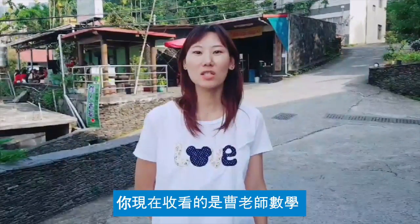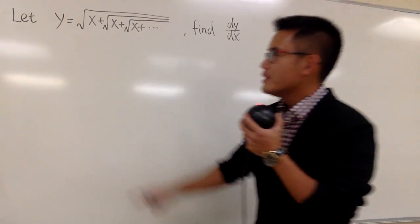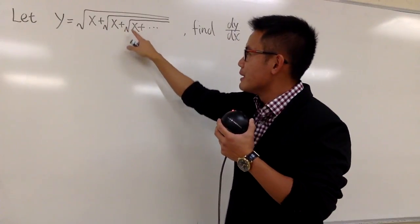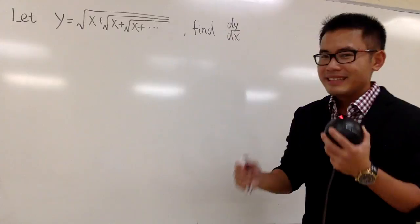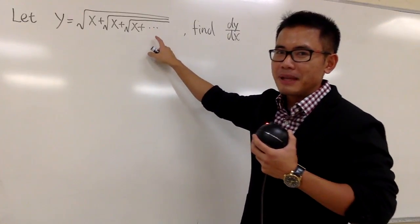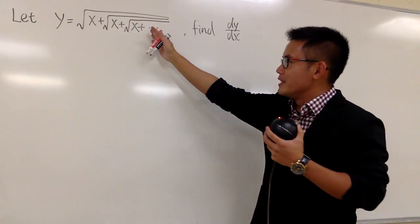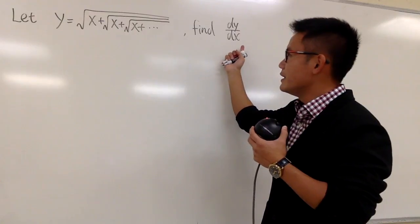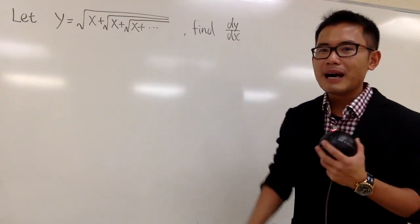Now we're going to show you what we're talking about. Here we have this function: y is equal to the square root of x plus the square root of x plus the square root of x, and so on — dot dot dot. There are infinitely many nested square roots; this just keeps on going forever. We would like to find dy/dx, the derivative of this function. How is this even possible?